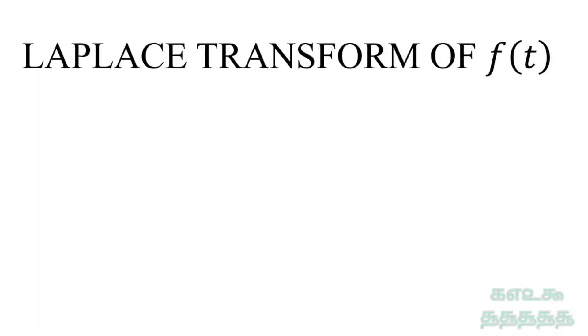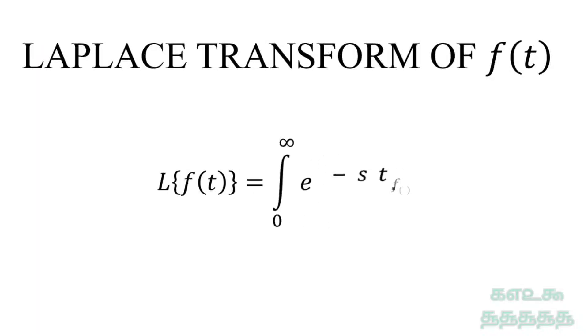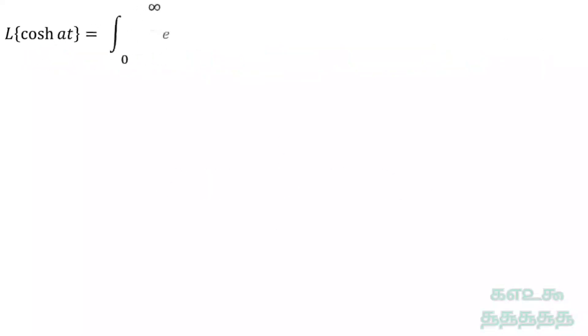The Laplace transform of f(t) is equal to the integration from 0 to infinity of e to the power minus st into f(t) dt. So the Laplace transform of cosh(at) is equal to the integration from 0 to infinity of e to the power minus st into cosh(at) dt.